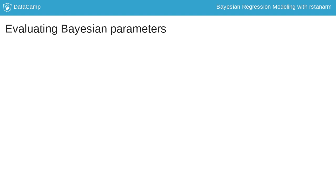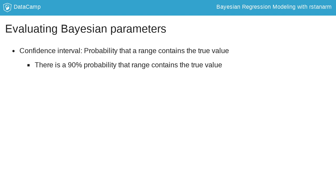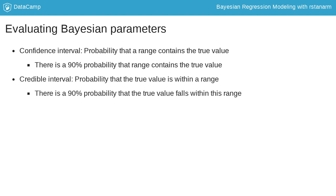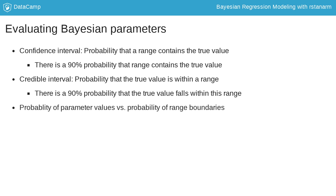A credible interval will seem very similar to a confidence interval. A confidence interval tells us the probability that a range contains the true value. However, the confidence interval cannot tell us anything about how probable any specific values for the parameter of interest are. This may seem like splitting hairs, but it is an important distinction to make in order to ensure we are making the correct inferences. In contrast, credible intervals tell us how probable values are, allowing us to make inferences about actual parameter values rather than the boundaries of the ranges.